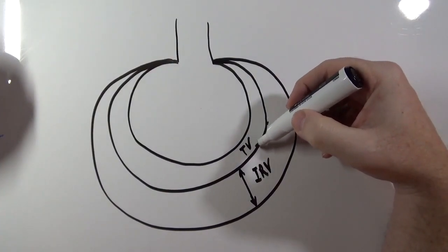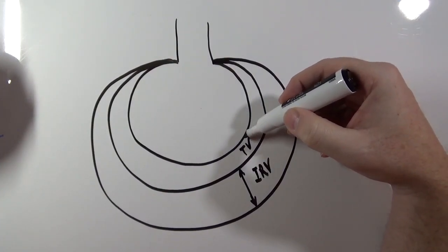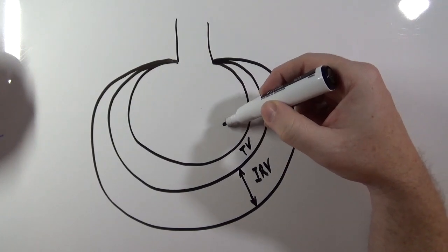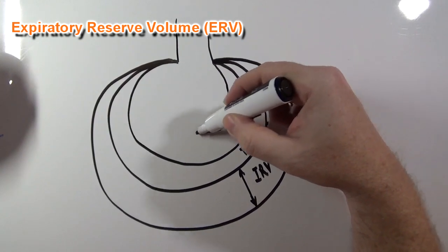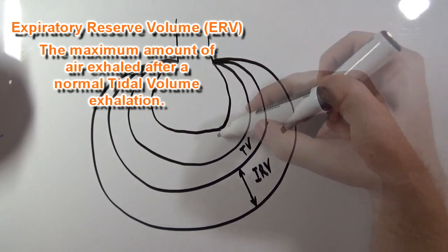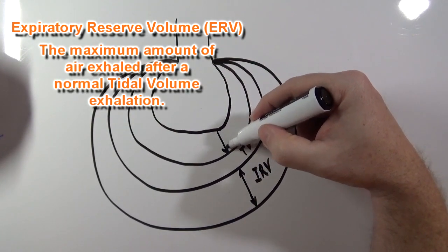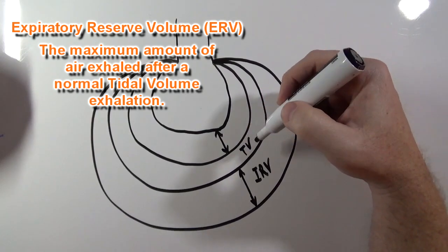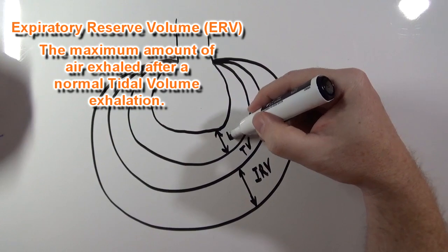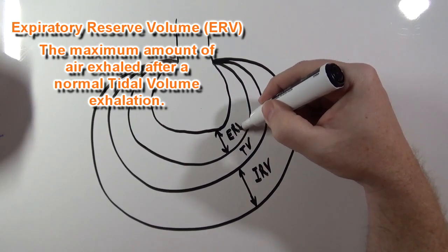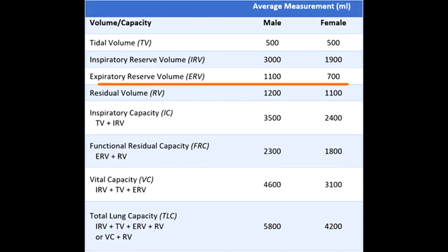If I were to inhale normally, then exhale normally, and then exhale as much air as I can, the lungs would shrink down to about this size right here. This volume of air is the expiratory reserve volume. The average expiratory reserve volume for a male is 1,100 milliliters, and for a female is 700 milliliters.